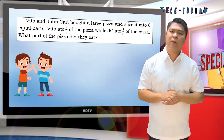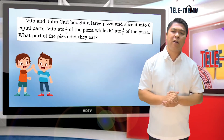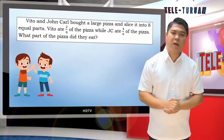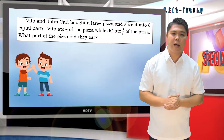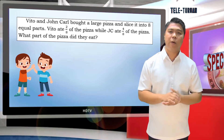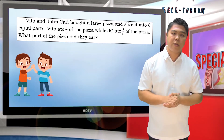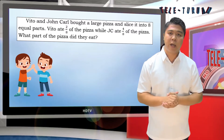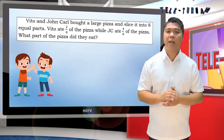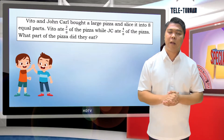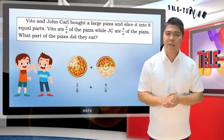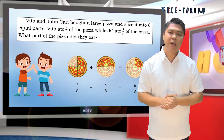To find out how to add similar fractions, let's have this word problem. Vito and John Carl bought a large pizza and sliced it into eight equal parts. Vito ate 2 eighths of the pizza while JC ate 4 eighths of the pizza. What part of the pizza did they eat? Let's have this illustration: 2 eighths plus 4 eighths is equal to 6 eighths.